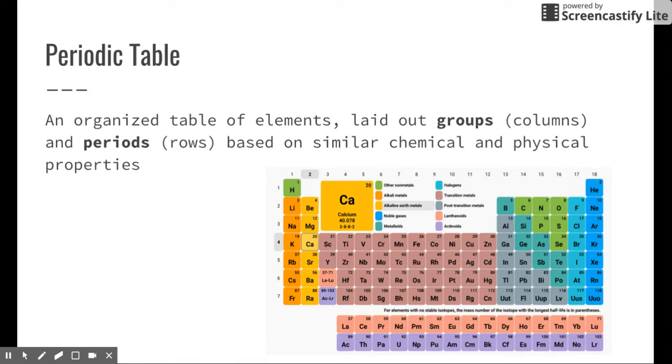So first, what is the periodic table? You may have seen it all over the place. You may or may not know what it is, but quite simply here, the periodic table is an organized table of elements. They're laid out in groups, or we'll call them columns for now, and periods which are rows based on similar chemical and physical properties. So this is the periodic table in all of its glory. We've seen this. You've probably seen it on science-y stuff or in science classrooms, and it's an extremely important table.